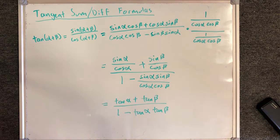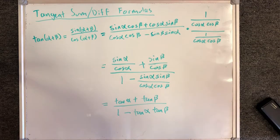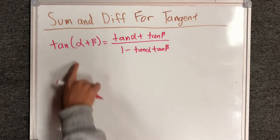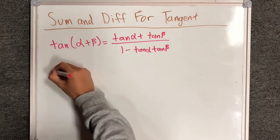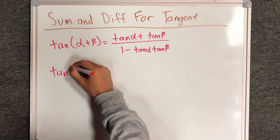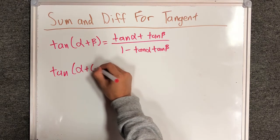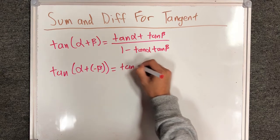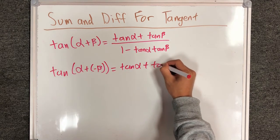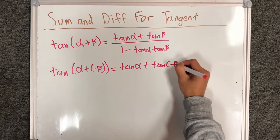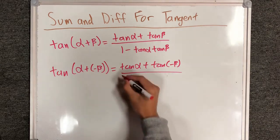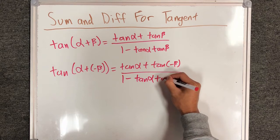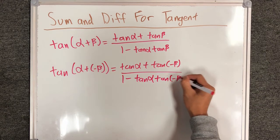Now if I wanted the difference of angle formulas for tangent, all I have to do is replace the beta with a negative beta. So we have tangent of alpha plus negative beta equals tangent alpha plus tangent of negative beta over 1 minus tangent alpha tangent of negative beta.